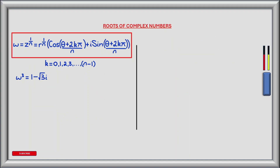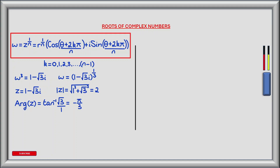Let's now look at an example of how we can use this. We are given the complex number w raised to the power of 3, which equals 1 minus the square root of 3 times i. So w is equal to the cube root of 1 minus root 3 i. We want to find all three roots of w. So complex number z equals 1 minus root 3 i. To put this in polar form, we need to find its modulus and argument. The modulus of z is the square root of 1 squared plus (root 3) squared, which equals 2. The argument of z is tan⁻¹(root 3 / 1), which equals negative pi over 3.